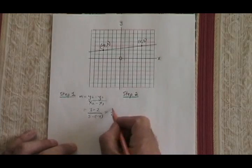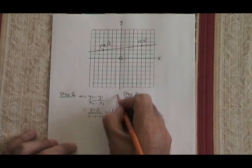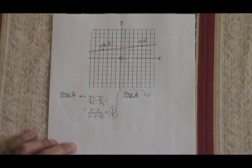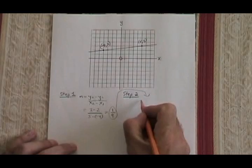Once I have my slope in the form of a fraction, I bring it over and I use it for step 2. I am using the same formula, but this time the m is replaced with 1 ninth.